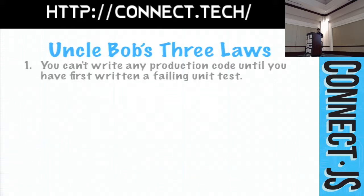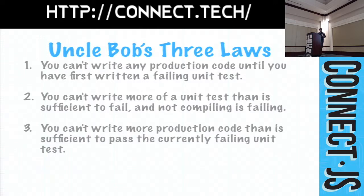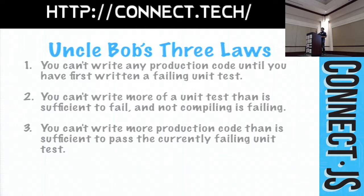The first law is: no production code gets written without a failing test. The second is: you cannot write more of a test than is necessary to get something to fail — so don't write all your tests at once, just write one test that fails. In JavaScript we don't have compiling errors, but an error where the object doesn't exist is enough — that's a fail. Then you go create the object or function you're calling, but you leave it empty because it's not supposed to do anything yet. The third law is: you can't write more production code than is necessary to make that test pass. You write just the empty function signature and now you can go further.